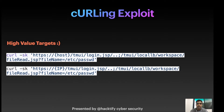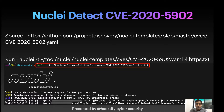You can also identify if the target is vulnerable using curl — running the curl command with HTTPS, the target host, the same endpoint, and the parameter filename equals /etc/passwd, essentially trying to read the /etc/passwd file. Additionally, the Project Discovery team has released a Nuclei template to identify CVE-2020-5902 in target servers, which can quickly detect if this vulnerability is running anywhere.